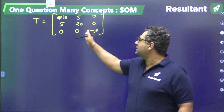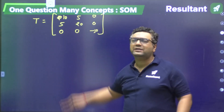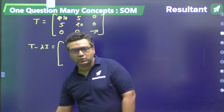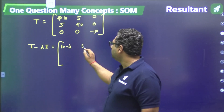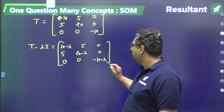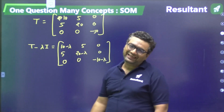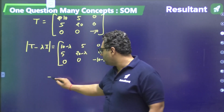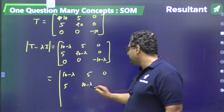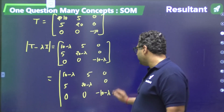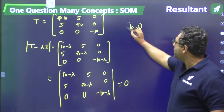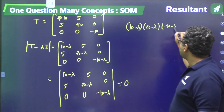For our matrix [10, 5, 0; 5, 20, 0; 0, 0, −10], using the eigenvalue approach we set up the determinant of the matrix minus lambda times the identity: det([10−λ, 5, 0; 5, 20−λ, 0; 0, 0, −10−λ]) = 0. Expanding this determinant gives a cubic equation in lambda.